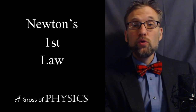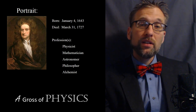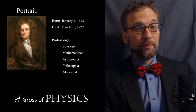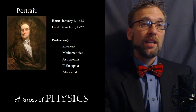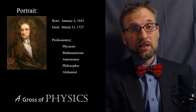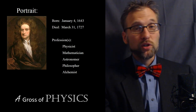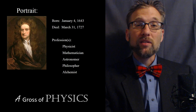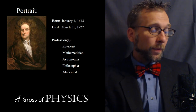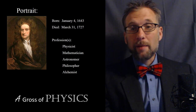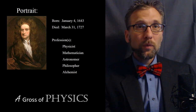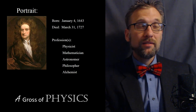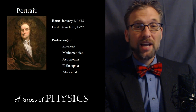In terms of who Newton was, he was born on January 4th, 1643, and he died on March 31st, 1727. He was a man of many talents — a physicist, he helped develop calculus, he was an astronomer, a philosopher, and he was even an alchemist, which was the study of trying to turn metals into gold. In many ways, that's chemistry. Although alchemy was never brought to fruition, it was still a pursuit that many people had in his time.